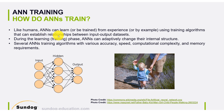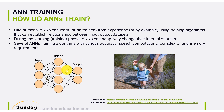Artificial neural networks can learn, can be trained from experience or by example, using what we call training algorithms that can establish relationships between inputs and the outputs. During the learning or training phase, artificial neural networks can adaptively change the network weights — the connecting weights between the input to the hidden layer, and then from hidden to the output. We have different training algorithms that vary by accuracy, speed, computation complexity, and memory requirements.